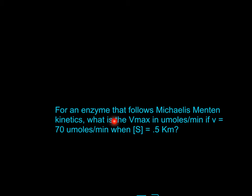So for this question, it asks, for an enzyme that follows Michaelis-Menten kinetics, what is the Vmax in umoles per minute if V equals 70 umoles per minute when substrate concentration equals 0.5 Km?